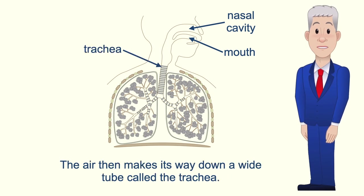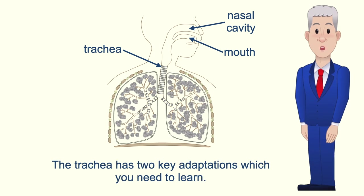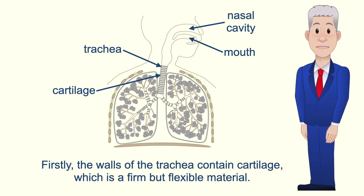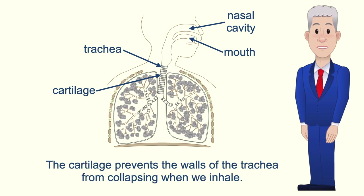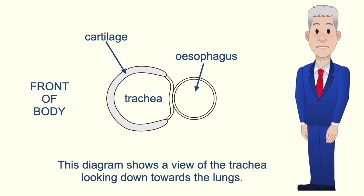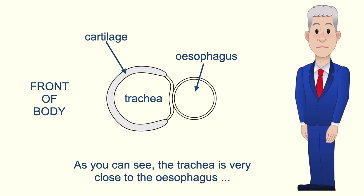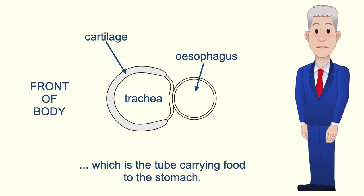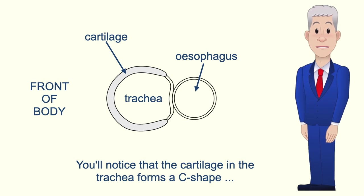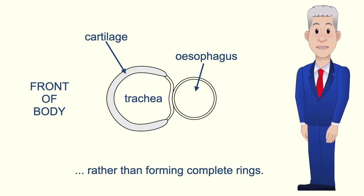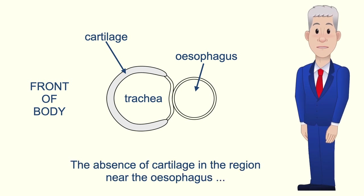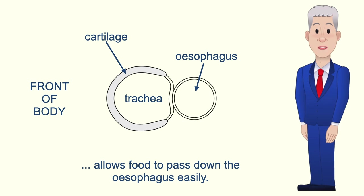The air then makes its way down a wide tube called the trachea. The trachea has two key adaptations. Firstly, the walls of the trachea contain cartilage, which is a firm but flexible material that prevents the walls from collapsing when we inhale. The trachea is very close to the esophagus, the tube carrying food to the stomach. The cartilage in the trachea forms a c-shape rather than complete rings, and the absence of cartilage near the esophagus allows food to pass down the esophagus easily.